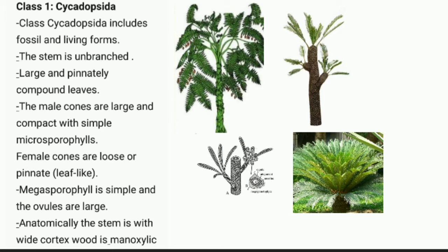The male cones are large and compact with simple microsporophylls. As gymnosperms do not produce flowers, they produce cones — male cones and female cones. The female cones are loose and pinnate leaf-like, with small leaflets present. The megasporophyll is simple and the ovules are large.